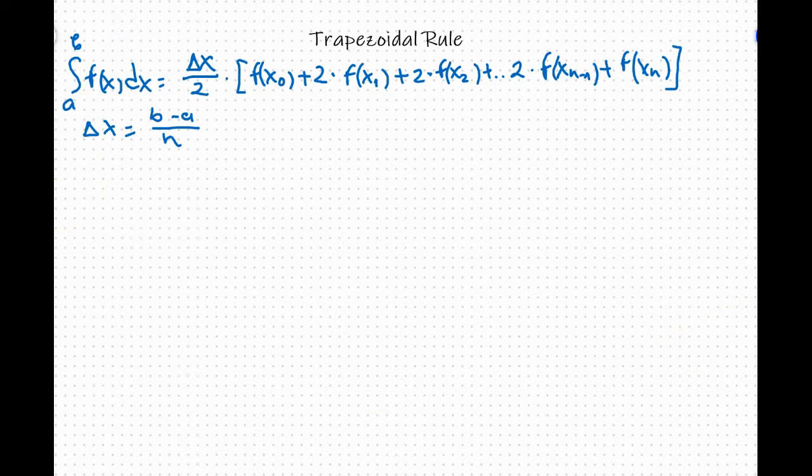What we are going to do now is approximate the integral from 0 to 3 of x squared plus 1 dx. And we are going to approximate it with n equals 5.